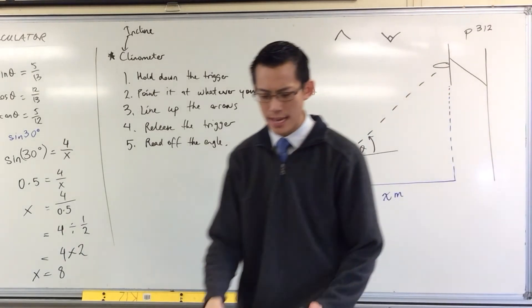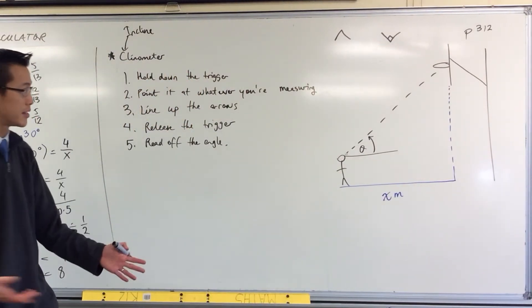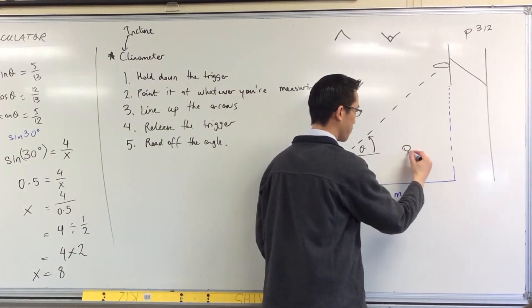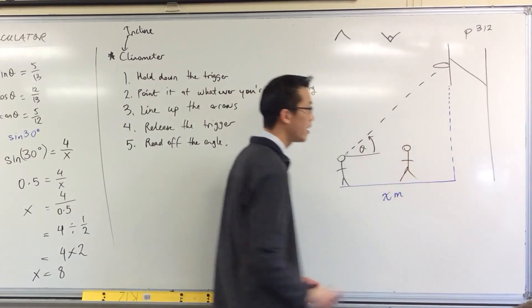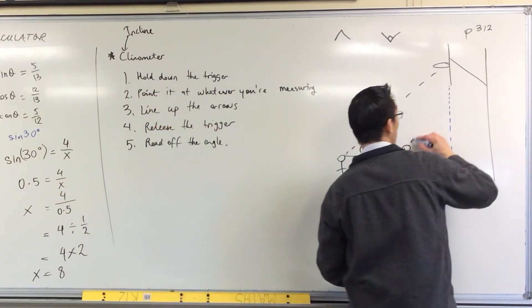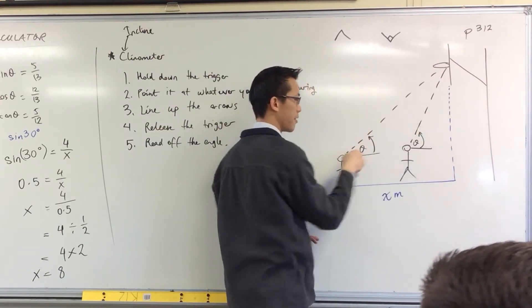Now hopefully you can see, you can get a whole bunch of these for the same object. For instance, if you stand closer, right, so let's put another person in here. If you stand closer and there's another person there measuring, their angle is going to be higher. Can you see that? That angle is higher than this angle, right?